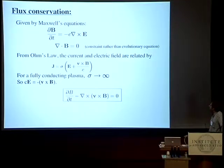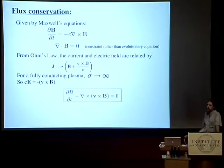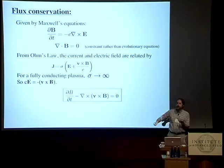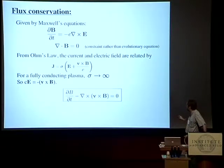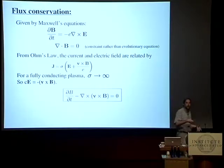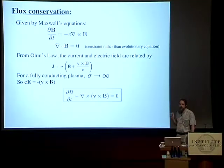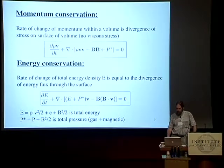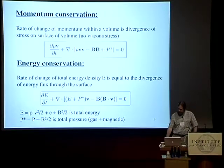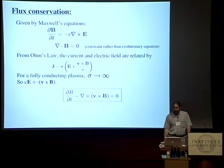Substituting E = −V×B into the induction equation gives the evolutionary equation for the magnetic field. Integrating this over areas and applying Stokes' theorem shows that magnetic flux is conserved — this is an area conservation law, not a volume conservation law. The rate of change of magnetic flux through an area is related to the electric field at the edges. This is a fundamental difference from the earlier volume conservation laws involving divergences, and suggests a very different way of discretizing the equations numerically — involving a curl rather than a divergence.